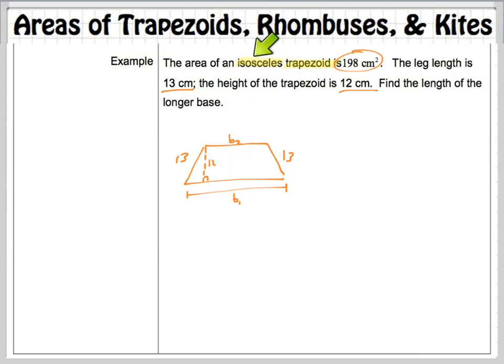Alright, so the key here is that this is an isosceles trapezoid. It gives us the area, tells us the leg length is 13, the height of the trapezoid is 12. I just had you guys draw a picture. The thing that I don't think you guys probably drew was B sub 1 and B sub 2, labeling the two bases.